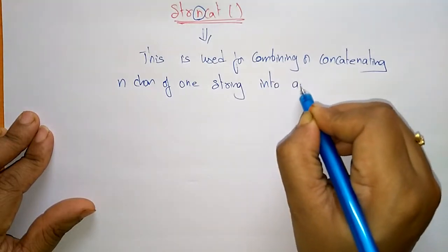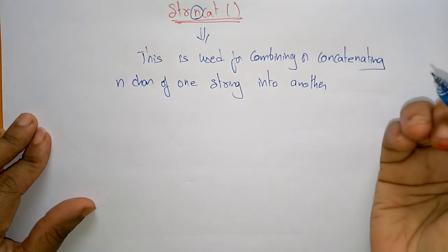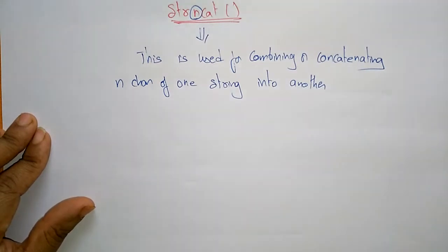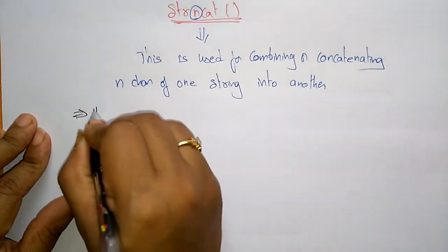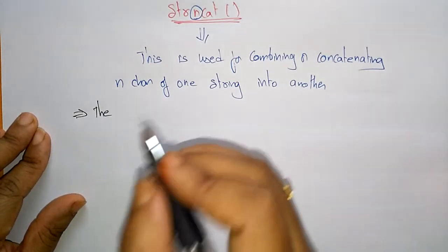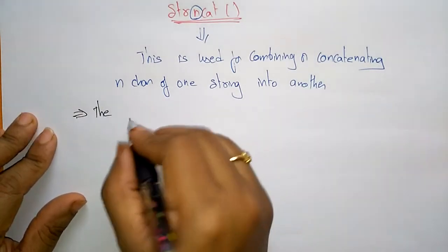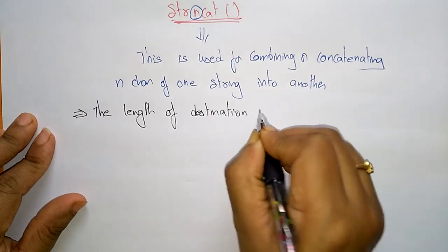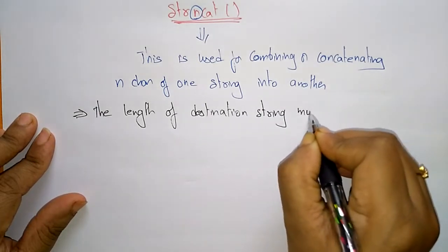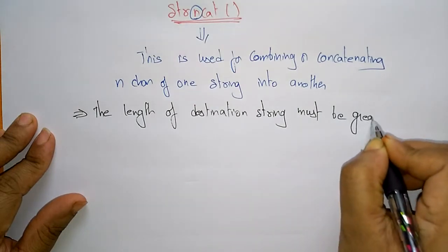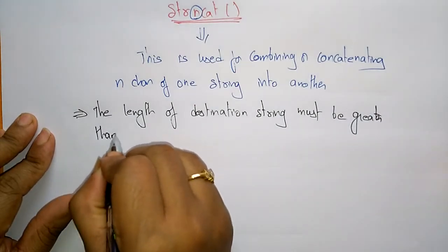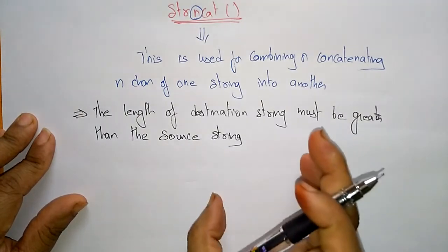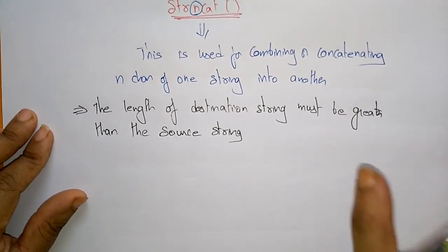Only n characters are copied from one string to another string — whatever number you specify in the program, only up to that many characters are copied from the source string to the destination string. The length of the destination string must be greater than or equal to the source string.